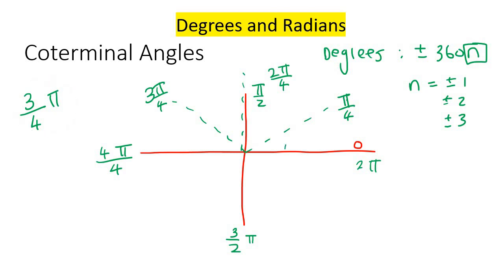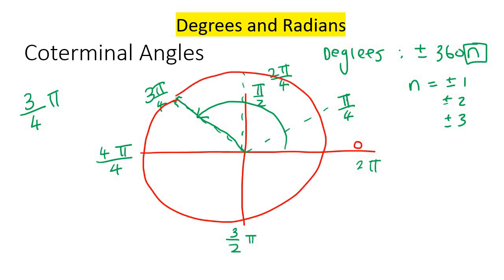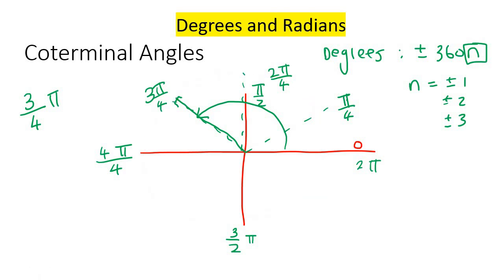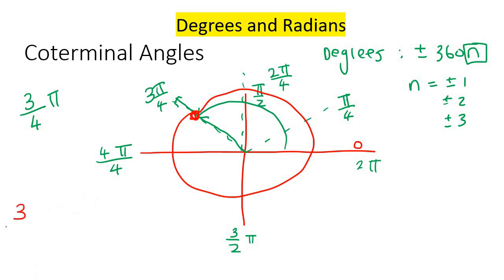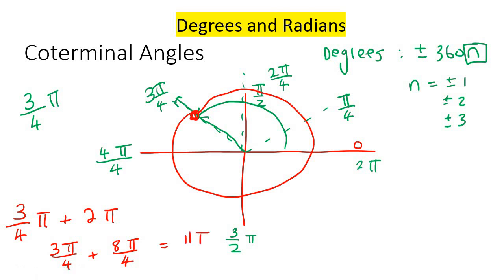So 3 pi over 4 — where would that be? That would be over there, and then we would draw our terminal side. Now if you wanted to create a coterminal angle, you would have to go all the way around again. To go all the way around is 2 pi. So you could add 2 pi. Your teacher might expect you to get a common denominator: 3 pi over 4 plus 8 pi over 4, because that's the same as 2, and that would be 11 pi over 4. So a coterminal angle would be 11 pi over 4.